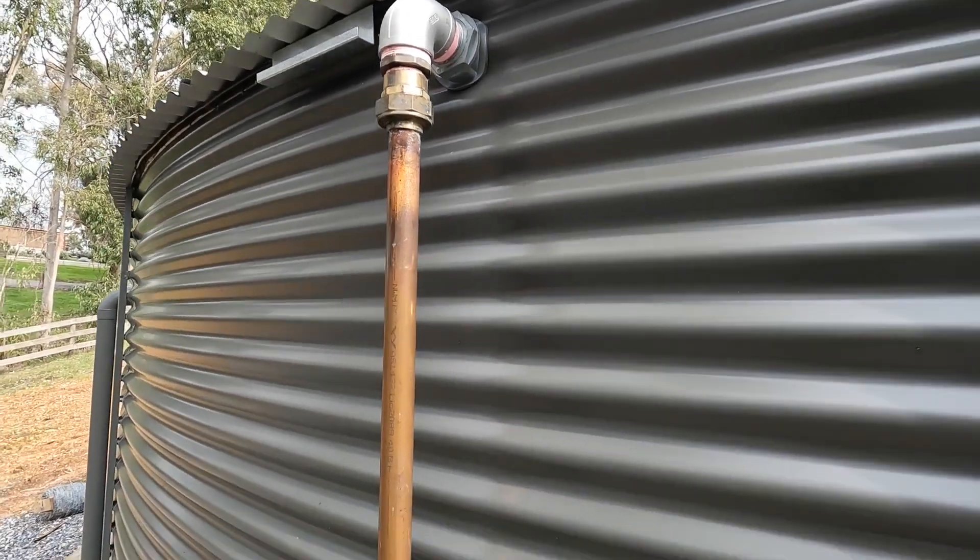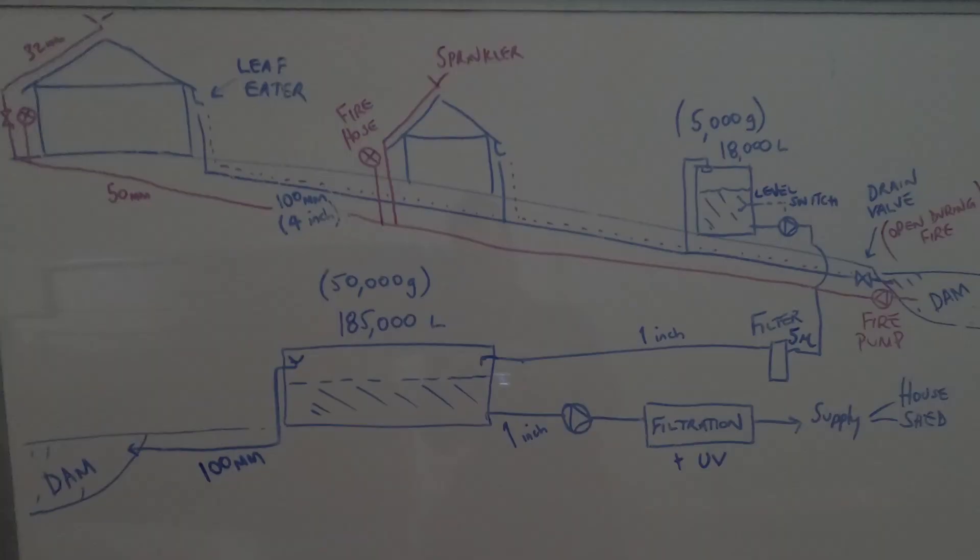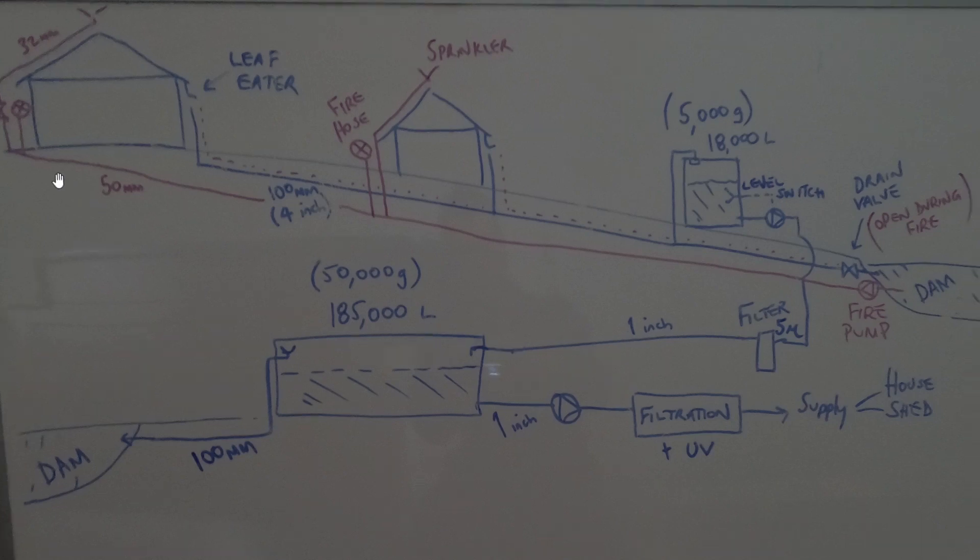Now here's my system layout in a simplistic view. So I have the house and a number of buildings on this property, and the first thing I do is collect the water from the roof area through the gutter system and then I have these leaf eaters.